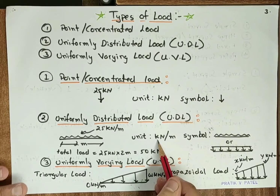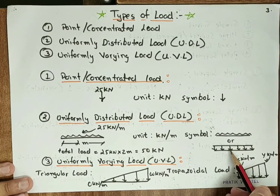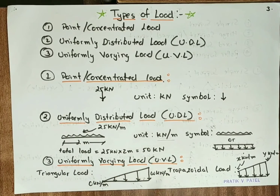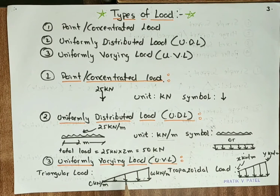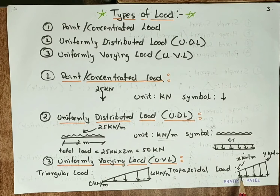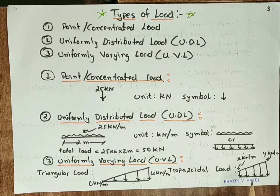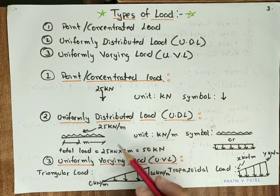The unit of UDL is kN per meter. The third type is uniformly varying load, also known as triangular load or trapezoidal load. For a triangular load, the load increases gradually with the length of the beam: at one end the load is 0 kN/m, while at the other end it is w kN/m. For a trapezoidal load, there is some predefined load at one end — say x kN/m — and it increases gradually along the length of the beam to a maximum of y kN/m at the other end. These are the three basic types of load.